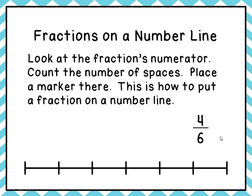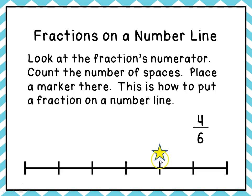Then we look at the fraction's numerator and count that number of spaces, placing a marker there to show where the fraction goes on the number line. Our numerator here is four, so we count four spaces — one, two, three, four — and put a marker right there to indicate four-sixths. There are six pieces and we counted four, just like the numerator.